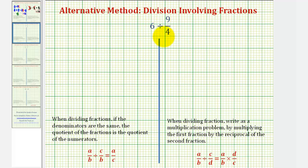To find this quotient, we're going to use an alternative approach where if both of these are in fraction form and both fractions have a common denominator, we can find the quotient of the two fractions by determining the quotient of the numerators.